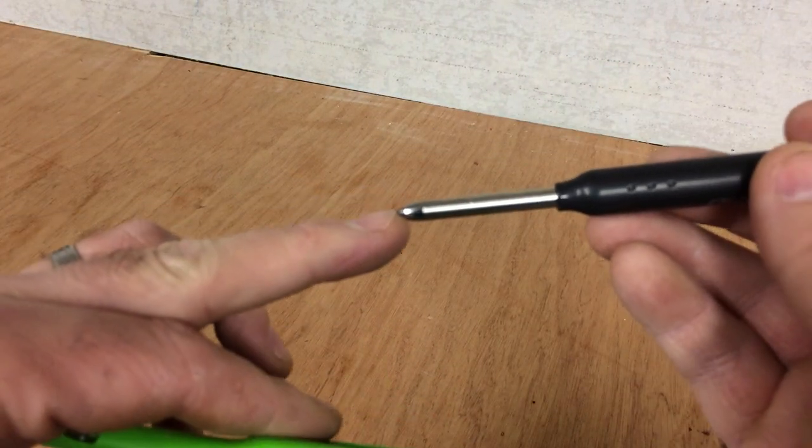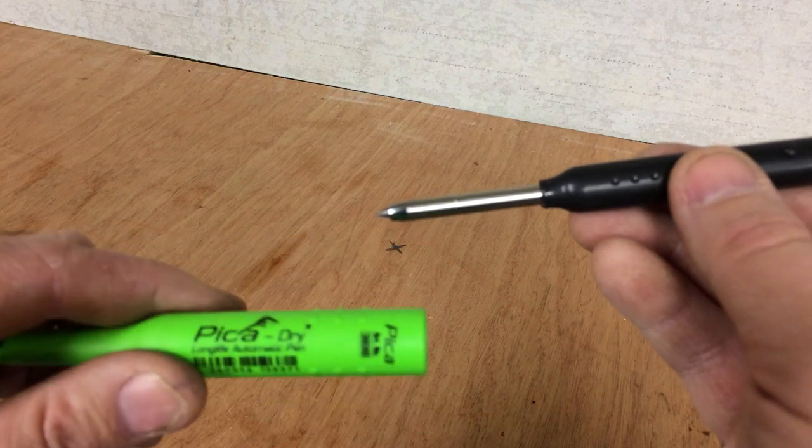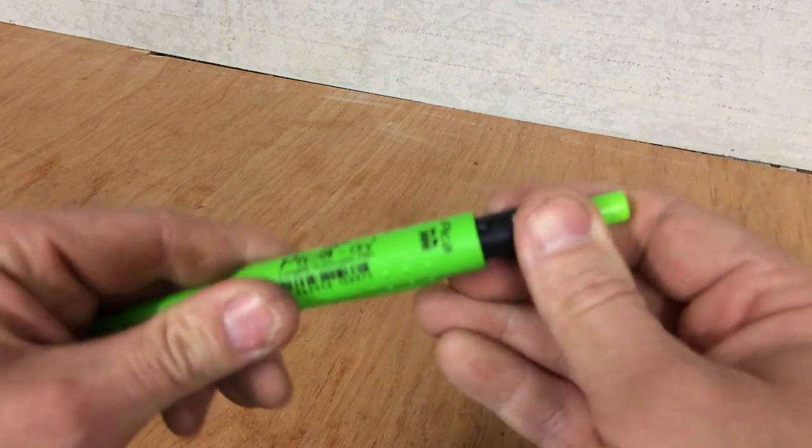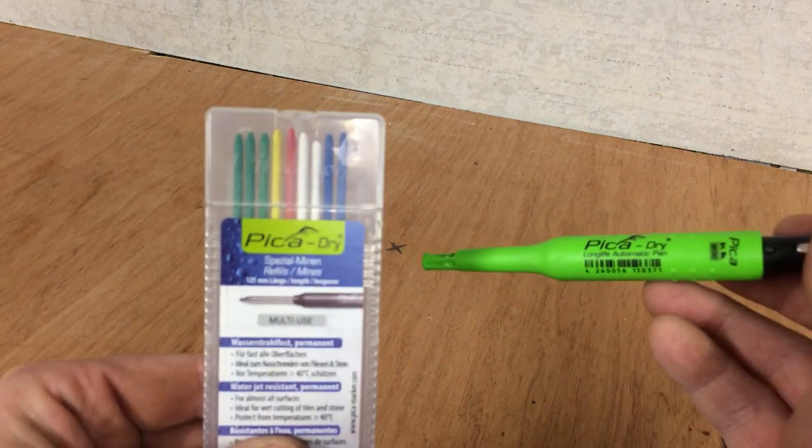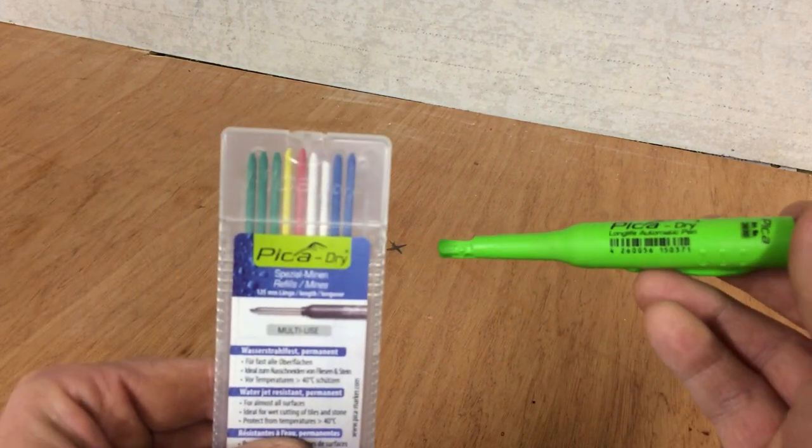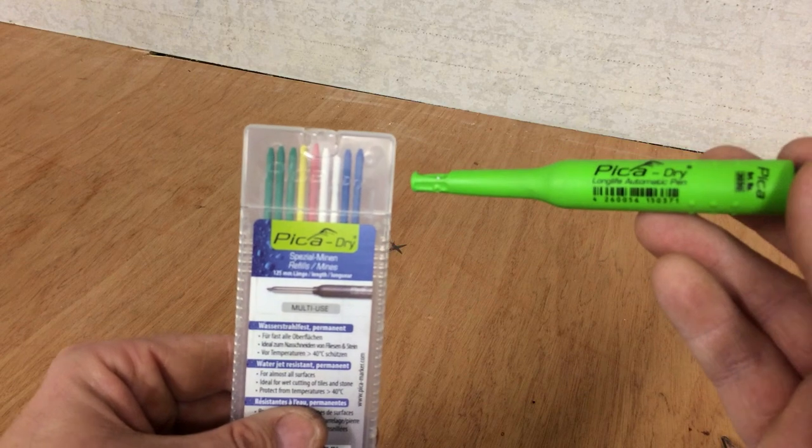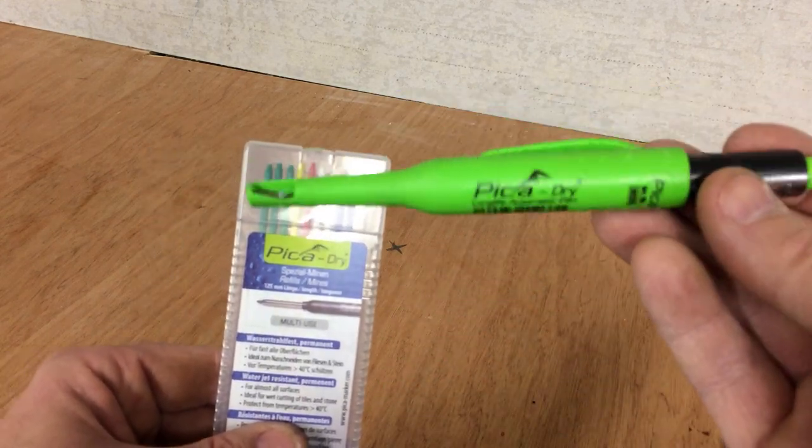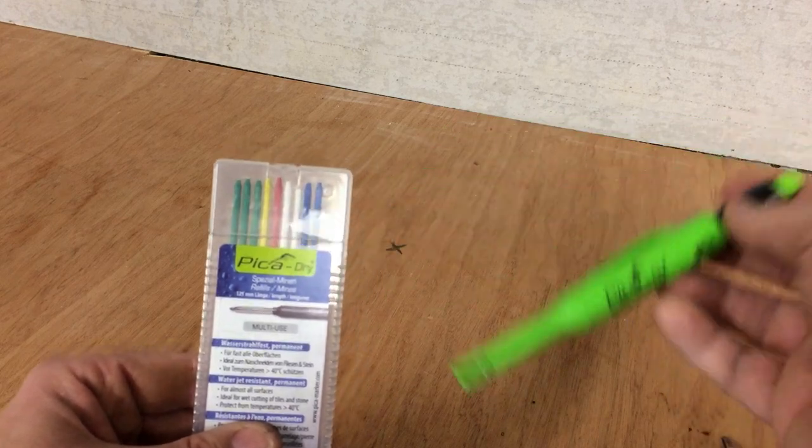Okay, so obviously in this pencil it's just the standard graphite lead here. But one of the main reasons I use these now is because Pica actually do a pack of interchangeable leads in different colors, which can be used in other pencils. So typically I would use this one for any carpentry work that I'm doing, woodwork, so it would pretty much stay with the lead in it.